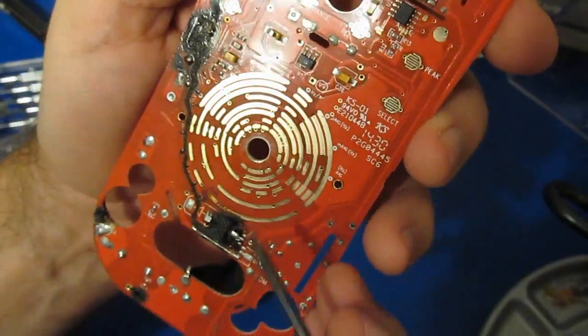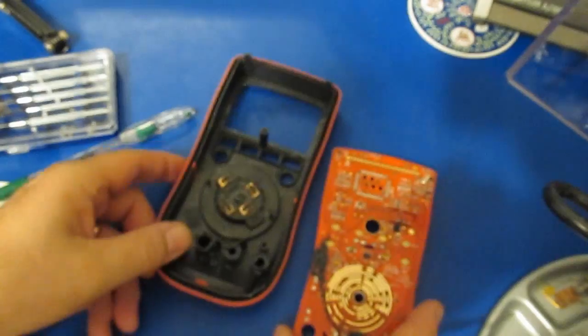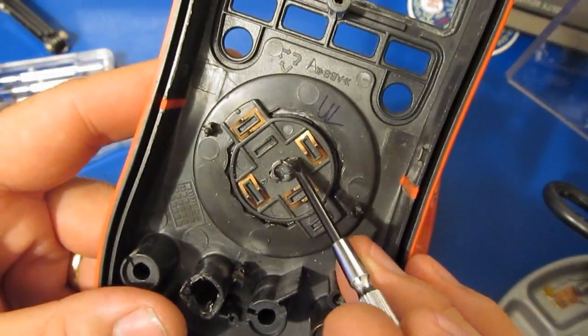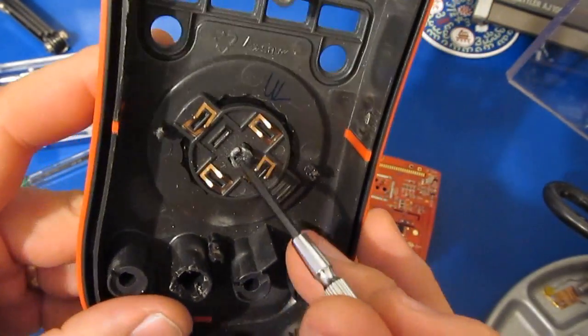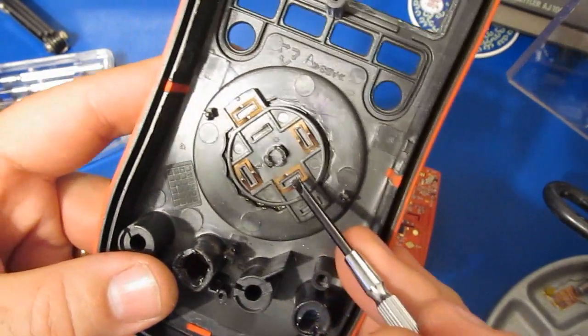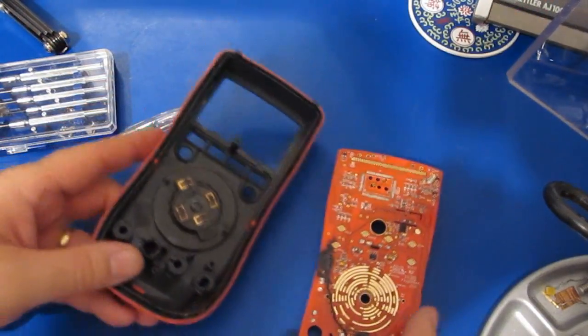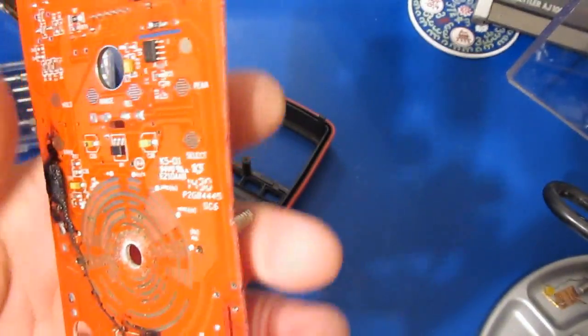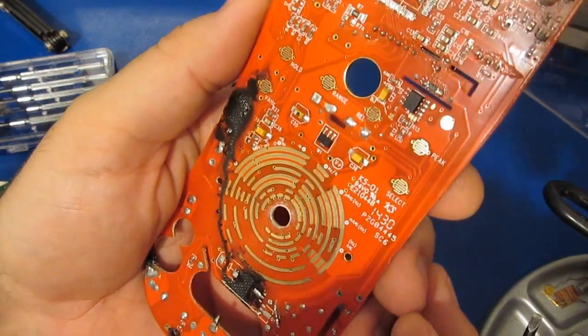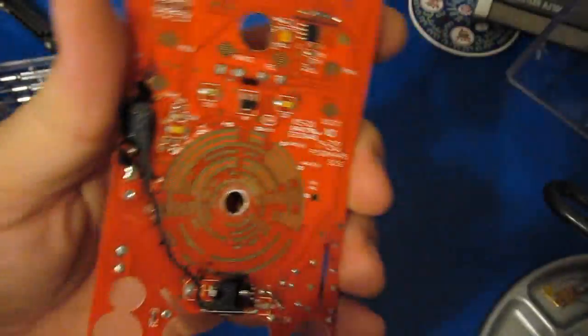Still, all in all, it looks pretty good. You can see the same kind of wear right here along the plastic, but the contacts themselves look to be in pretty good shape. Let's take a look at this under the microscope.